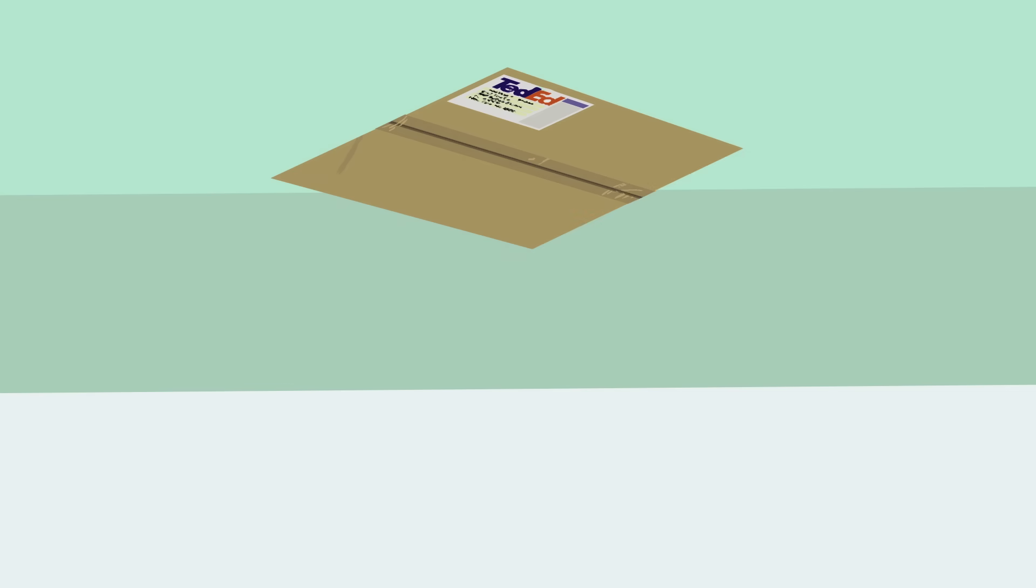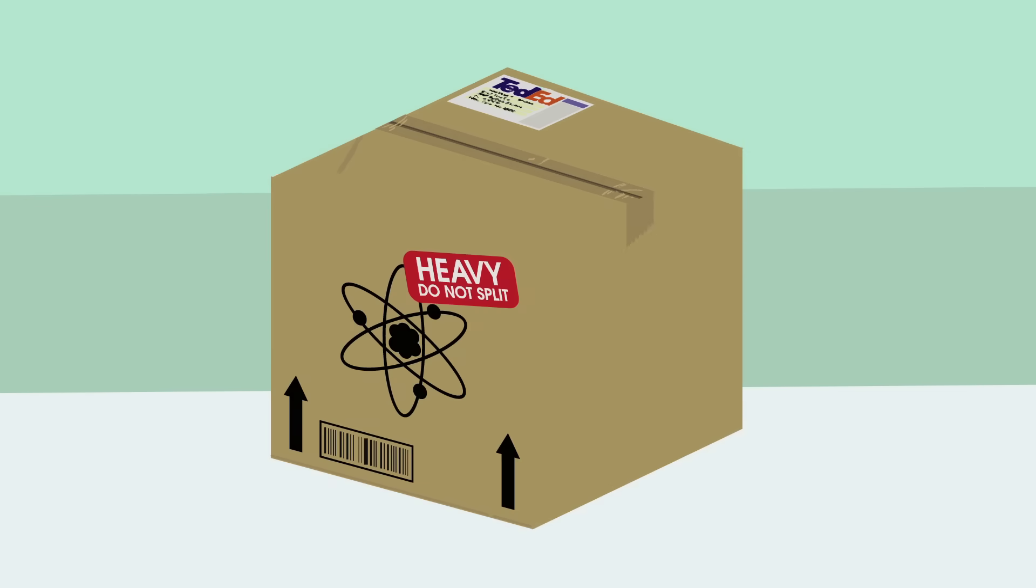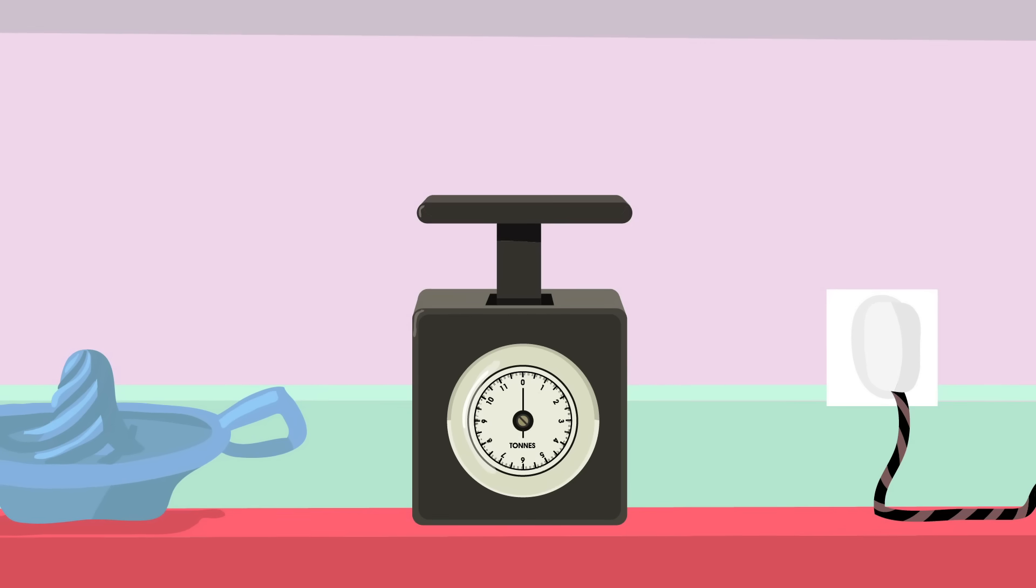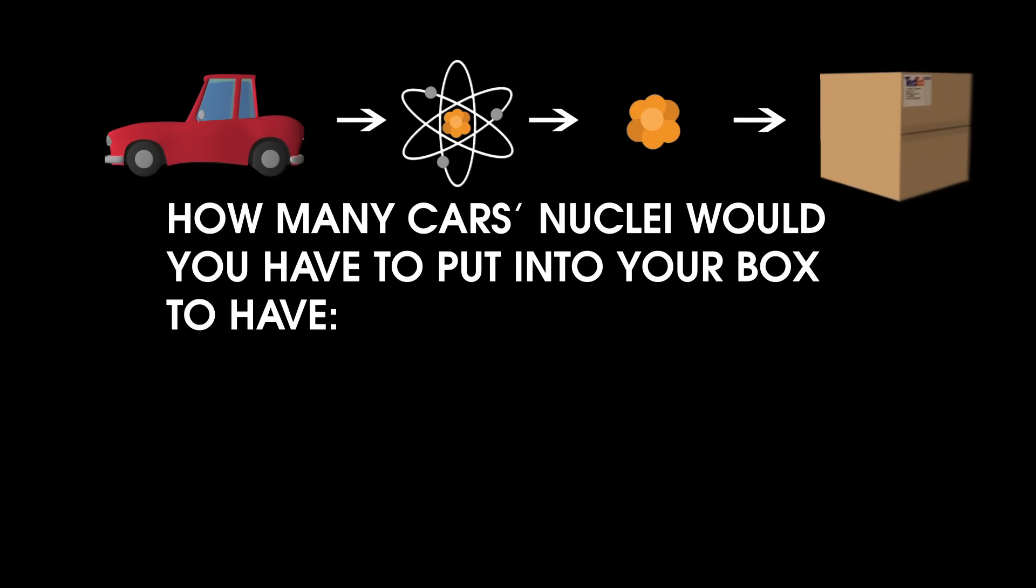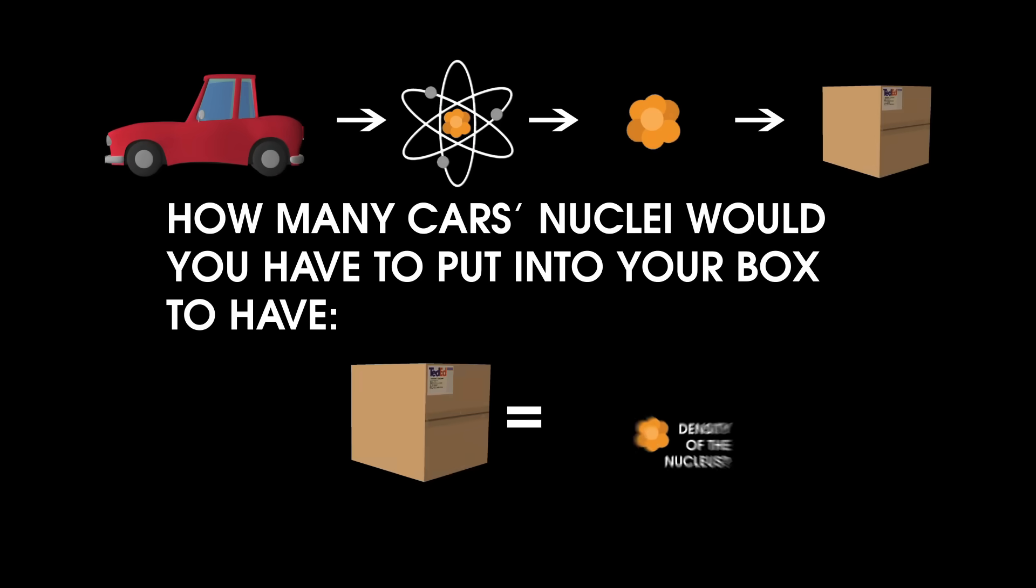Make a box that is one foot by one foot by one foot. Now, let's go and grab all of the nuclei from a typical car. Now, cars on average weigh two tons. How many cars' nuclei would you have to put into the box to have your one foot box have the same density of a nucleus?